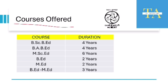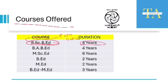Coming to the courses offered by these RIEs, the first one is a four-year integrated course known as BSc BEd. This BSc BEd is divided into two streams: BSc BEd PCM and BSc BEd CBZ. The course duration is four years, in which you will be learning BSc and BEd simultaneously.